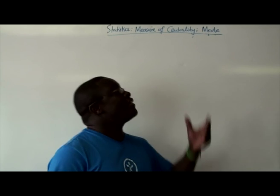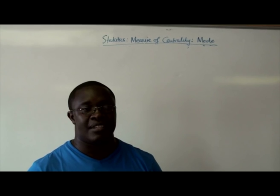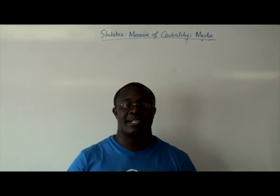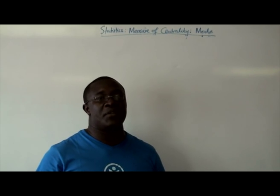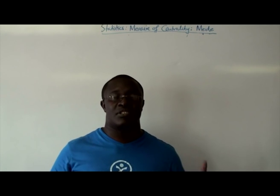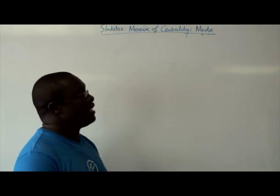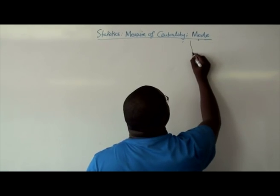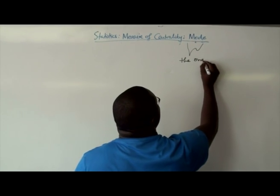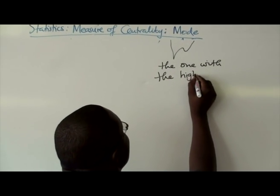All of them are called the measures of centrality or measures of central tendency — that typical number, that expected number, that average. Where if you are told that generally the class is 50%, you have an idea of how the class performed. The mode by definition is the one with the highest frequency.